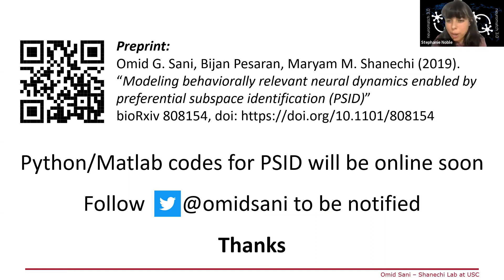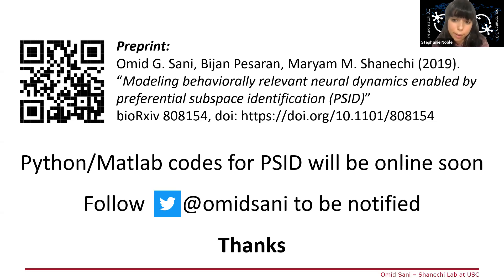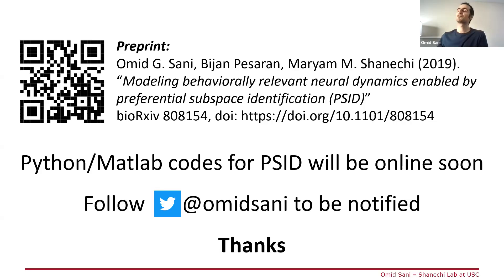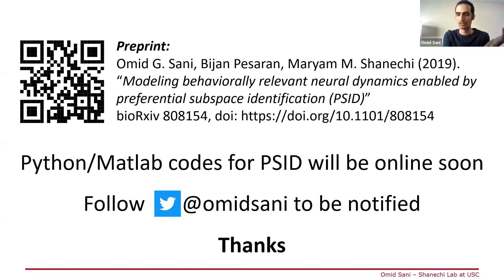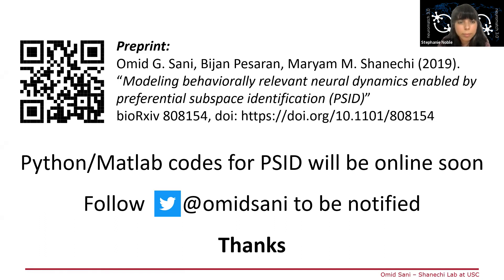Thank you for that great talk, Omid. We have a question from Cole Hurwitz: have you tried using PSID on one behavior and then seeing how well the learned dynamics explain another behavior — some held-out behavior you would think shares the same neural dynamics? That's a very good question. We've actually done this, hopefully visible in the paper when it comes out. We tried leaving out different dimensions of behavior from training — like training on a random subset of joints and then predicting the others. Even in that case, when PSID hasn't seen the behavior, because all those joints are involved in the same task and there are correlations between them, the model PSID learns was more predictive of unseen joints than the other methods.